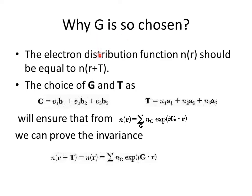G is chosen to satisfy a certain condition. Since n(r) must have translation symmetry, n(r) should equal n(r + T). G must be chosen such that this is satisfied. The translation vector T is given in terms of the space lattice primitive vectors, and G is composed of the corresponding reciprocal lattice vectors with integer combinations in both T and G.